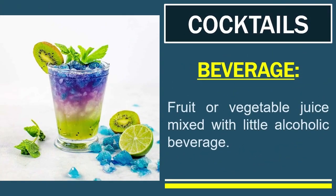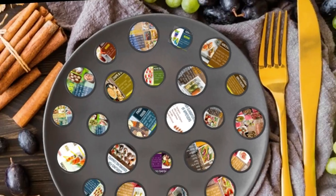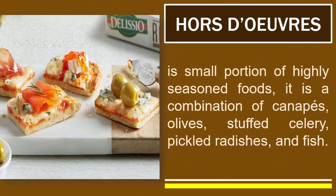The other type is the beverage, which is a fruit or vegetable juice mixed with a little alcoholic beverage — as Romans used to call it, aperitives. Another example of a cold appetizer is the hors d'oeuvre, pronounced 'or-derv.' This is a small portion of highly seasoned foods — a combination of canapes, olives, stuffed celery, pickled radishes, and fish. It is served on an individual plate when guests are seated, and sometimes simply placed on a platter and passed around.